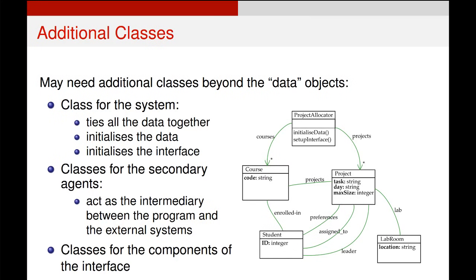The final thing I want to mention before we finish up is: what are those other classes? We've dealt with Course, Project, Student, and LabRoom - these are all data objects containing information we need. However, often we'll have higher level classes that we want to add in to tidy up our project.